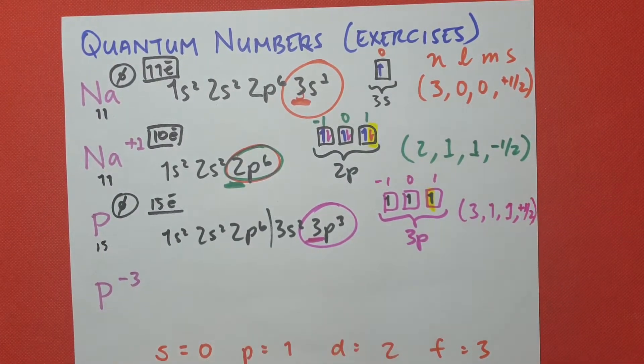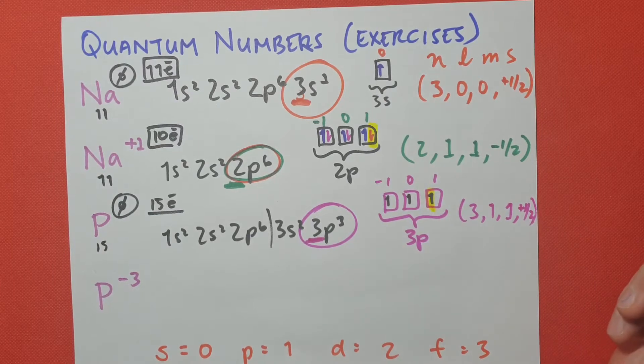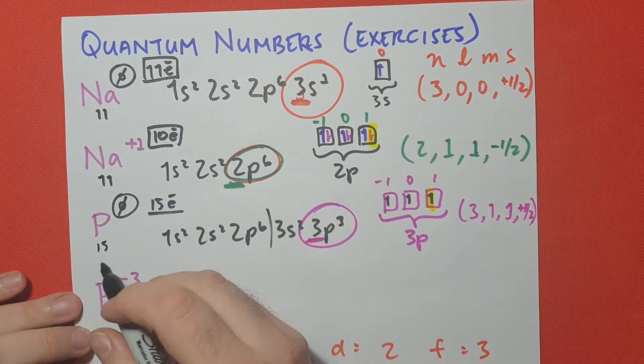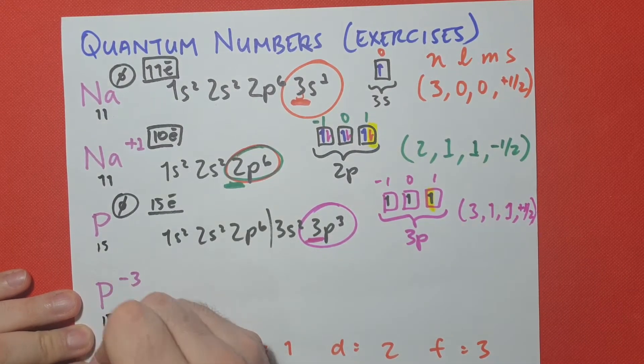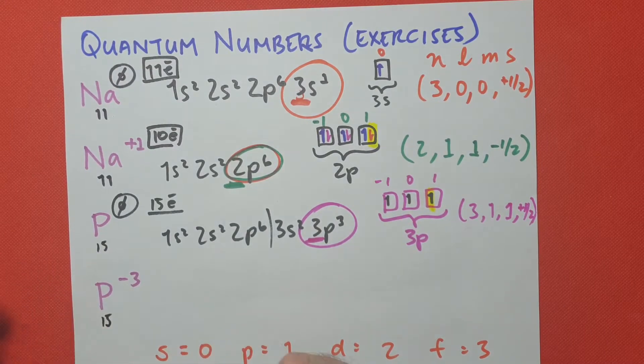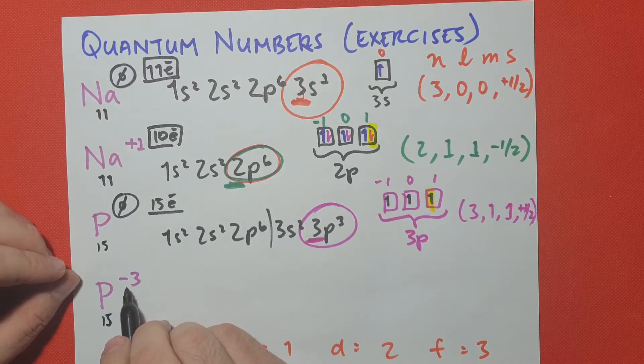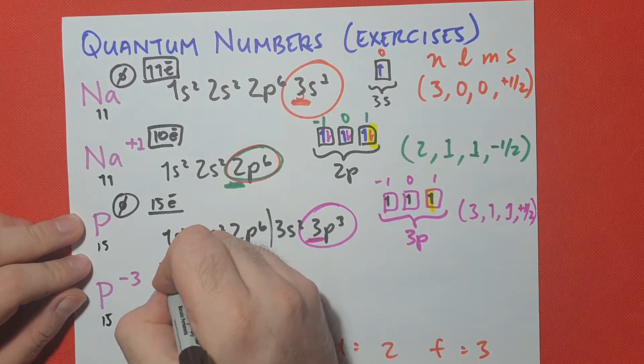Last but not least, a phosphorus ion, which is actually an anion. So in its regular state, it still has 15 protons for its atomic number, meaning that in a regular state, it would have 15 electrons, but here we're more negative by 3. So this guy has 18 electrons.